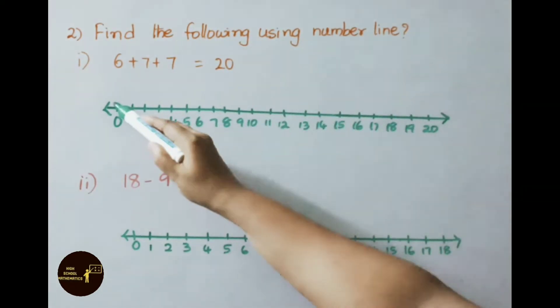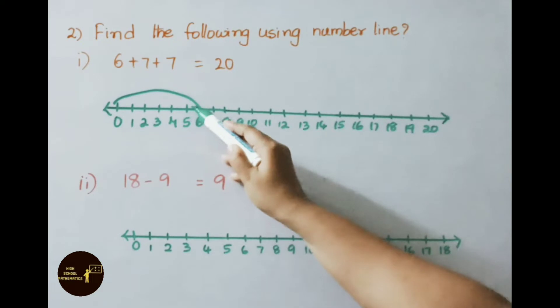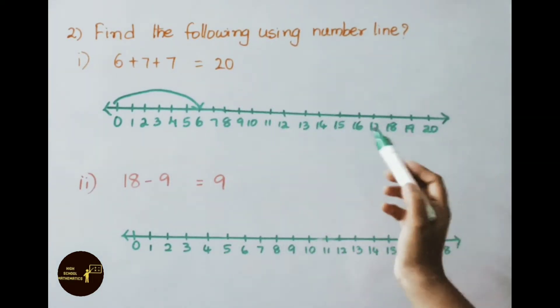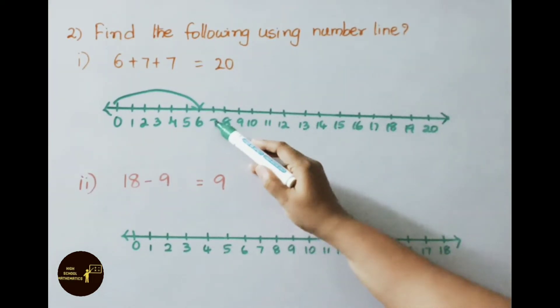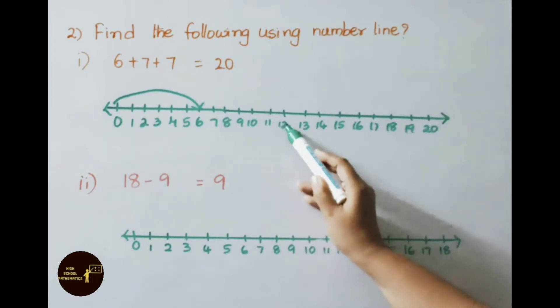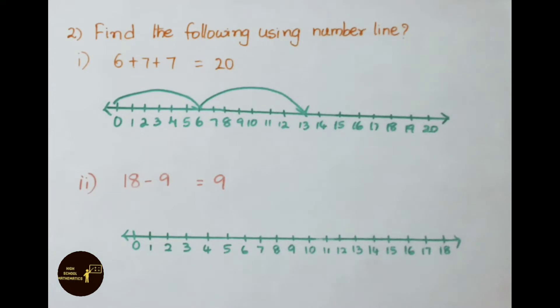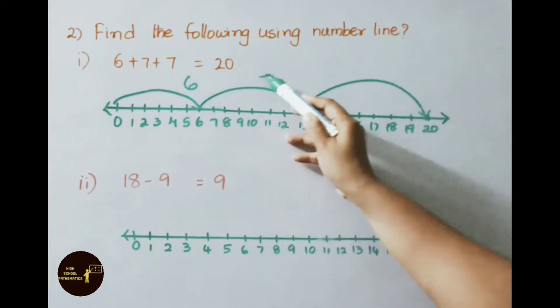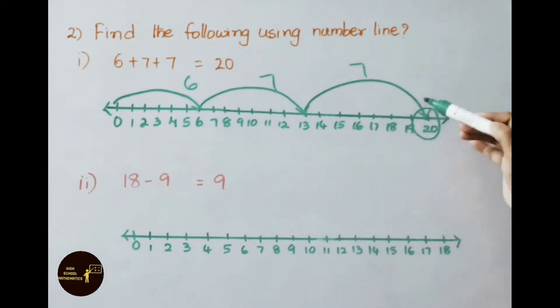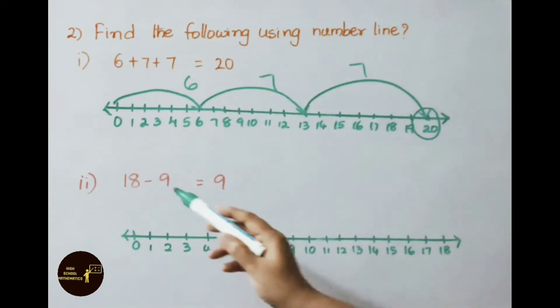First we have to show 6. From 0 onwards you mark 6, then 7 we must add. Count 7 numbers after 6: 1, 2, 3, 4, 5, 6, 7. So 6 plus 7 plus 7 equals 20.